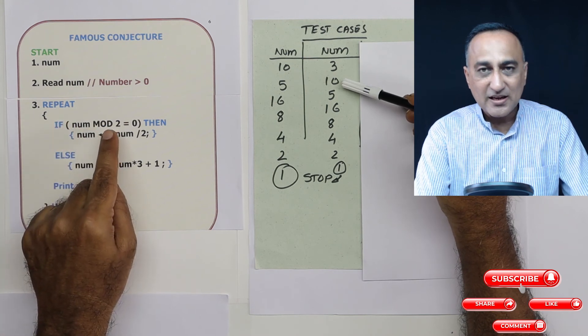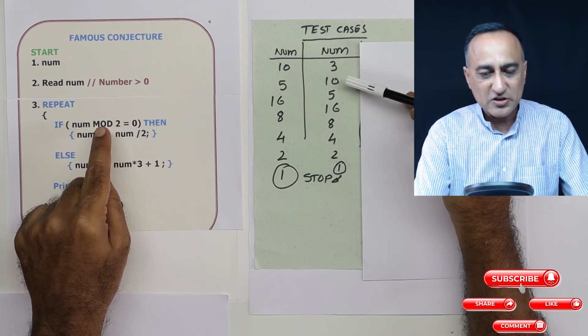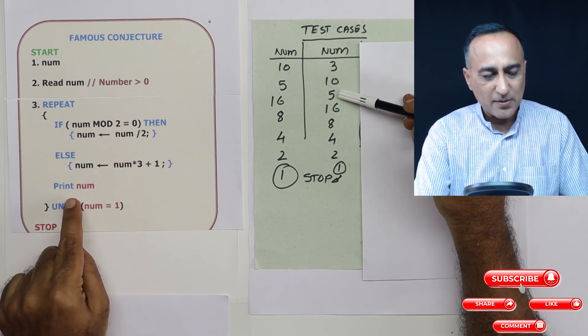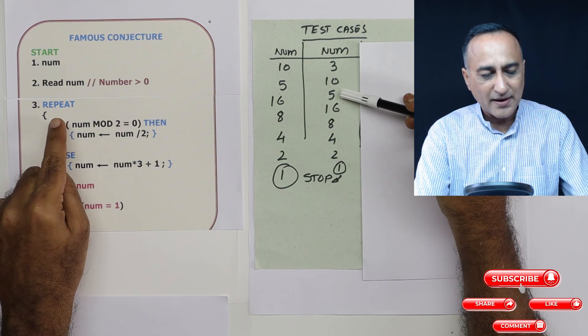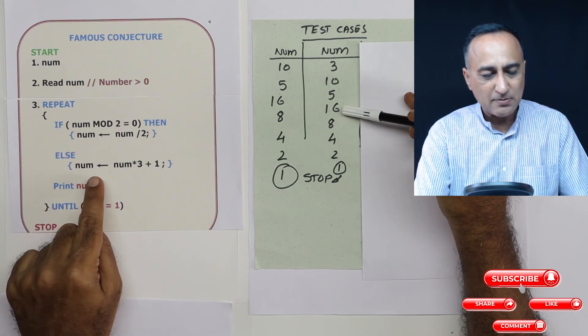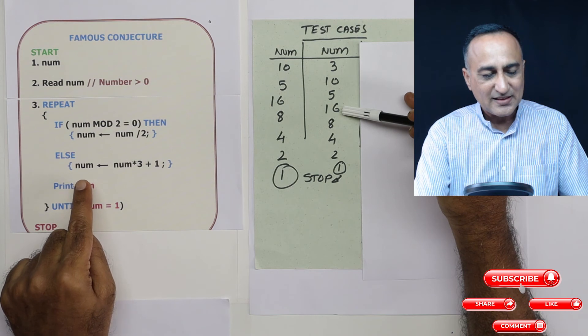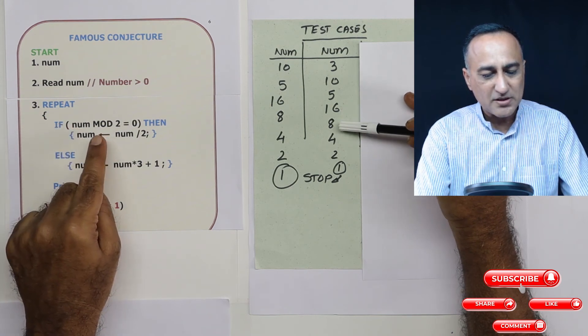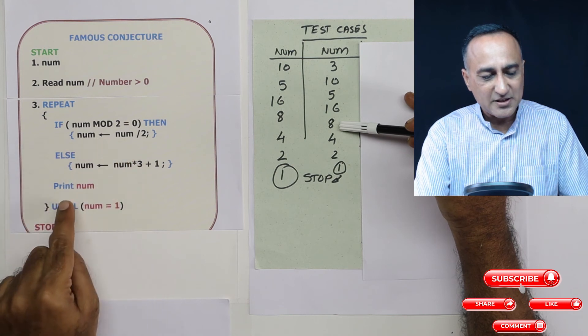10 mod 2 is remainder is 0, so number becomes 10 by 2 is 5. So I will print 5. Then I go back here. 5 is an odd number, so the next number becomes 16. Then it becomes 16. It goes back here. 16 mod 2 is 8. 8 is printed here.